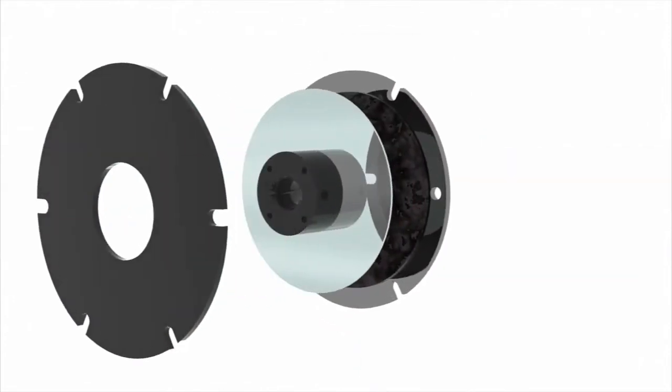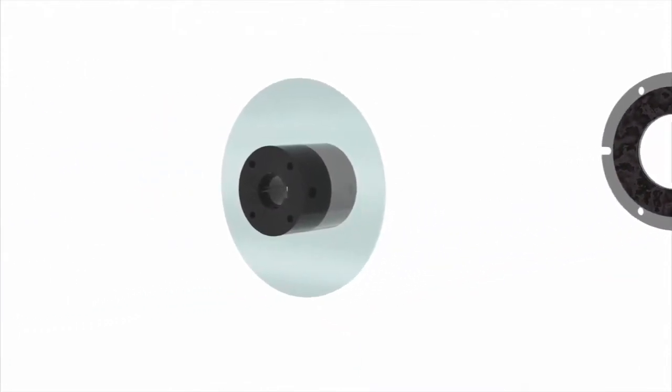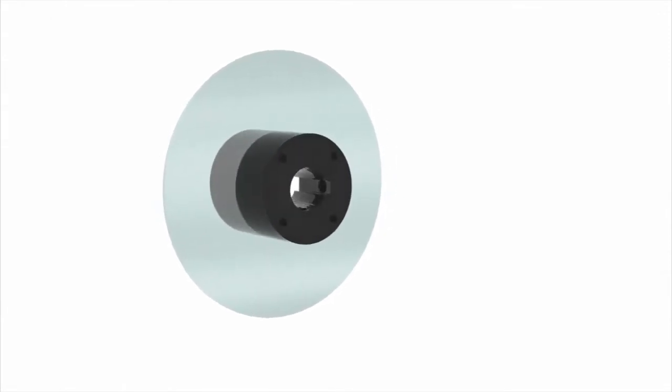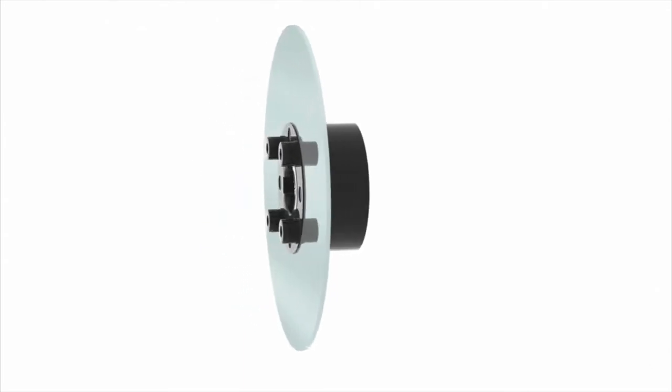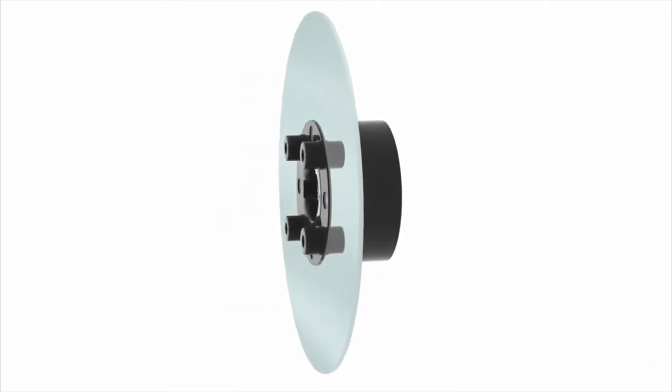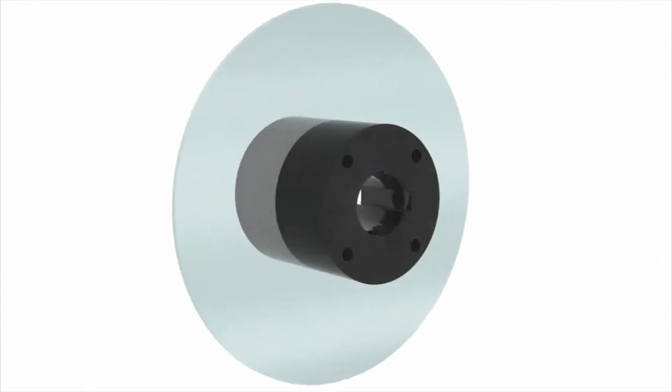For zero backlash applications, the hub is directly connected to the spring steel disc. In these types of brakes, when the friction discs are held, there is no backlash movement at all. Backlash can be critical in high-precision applications like medical equipment or microchip processing.